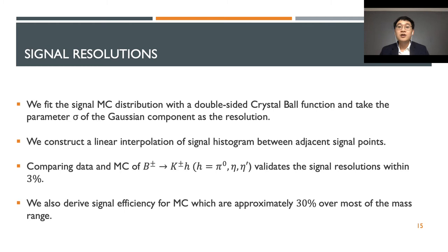Next, we fit the signal Monte Carlo distribution with a double-sided crystal ball function and take the parameter sigma of the Gaussian component as the resolution. To obtain more hypothesis mass points, we construct a linear interpolation of signal histogram between adjacent signal points. We check our signal resolution by comparing the data and the Monte Carlo of the standard model B meson decay into K-on and the standard model mesons. We found the agreement within 3%, which is pretty good. We also describe the signal efficiency for Monte Carlo with approximately 30% over most of the mass range.